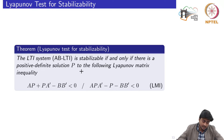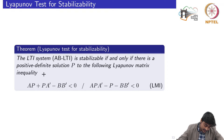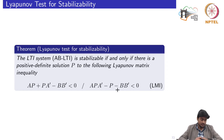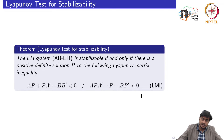The last test is the Lyapunov test for stabilizability. It states that the system is stabilizable if and only if there is a positive definite solution P to the following Lyapunov matrix inequality. This applies in the continuous-time domain, and similarly in the discrete-time domain when the A-B pair comes from a discrete-time system. We term this an LMI — a linear matrix inequality.